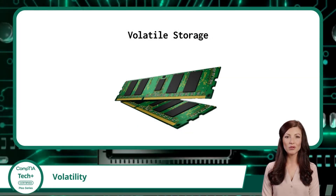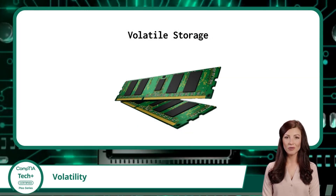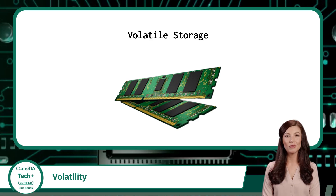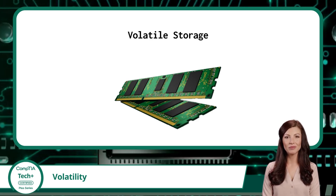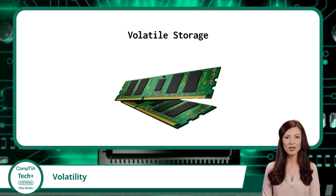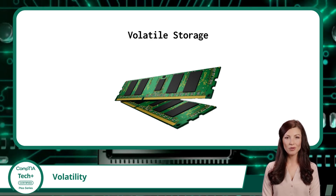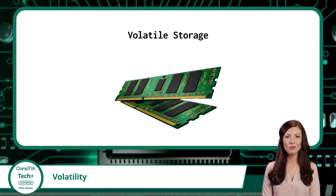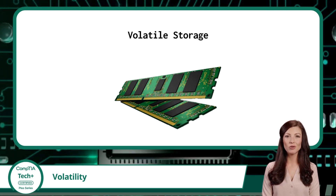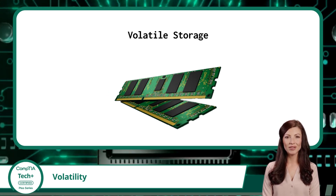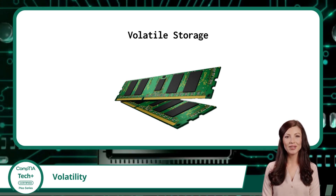Volatile storage refers to a type of storage that requires a continuous power supply to retain data. Random access memory, or RAM, is the most common example of volatile storage. When the power is cut off or the system is turned off, the data stored in volatile storage is lost, making this your temporary storage option.